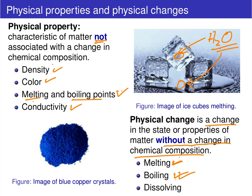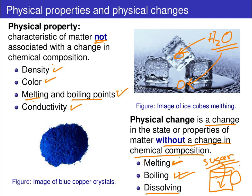Same story with boiling — moving from a liquid to a gas phase does not alter the chemical identity of the compound. Dissolving is another example. We talked about a cup of tea in a previous lecture. If you have a cup of tea and you put some sugar into it and dissolve it, dissolving that sugar into the tea does not alter the chemical identity of that sugar.